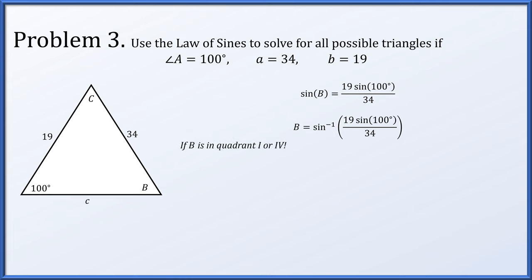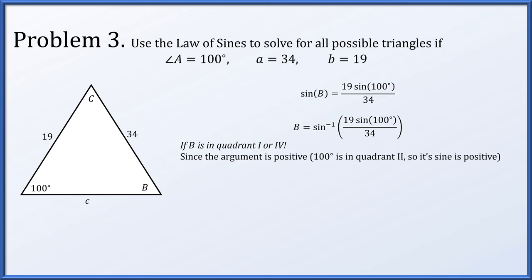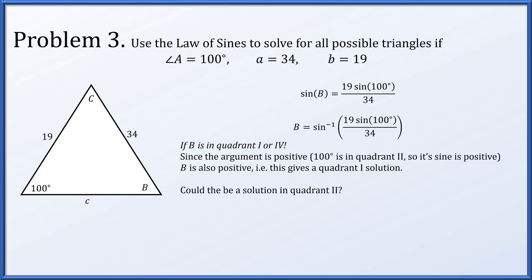Remember that the range of the arcsine function is quadrants 1 and 4. The thing we're taking the arcsine of is positive — since 100 degrees is a quadrant 2 angle, its sine is positive. So inside the parentheses we have 19 times a positive number divided by 34, meaning we're taking the arcsine of something positive, so the B produced by the arcsine function is the quadrant 1 angle. But there might be another solution in quadrant 2, since arcsine misses quadrant 2 angles.